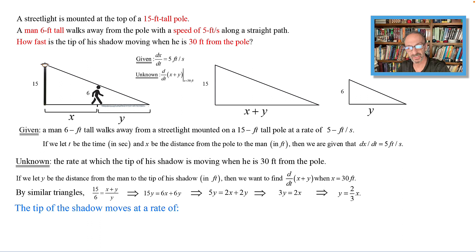The tip of the shadow moves at a rate of d/dt of x plus y. We're going to replace y with two-thirds x that we came up with, so we have d/dt of x plus two-thirds x. That is d/dt of five-thirds x. We could pull the five-thirds out because it doesn't have a variable t, and dx/dt was given to me to be 5 feet per second.